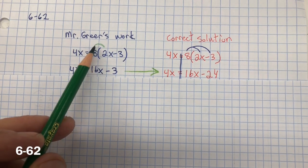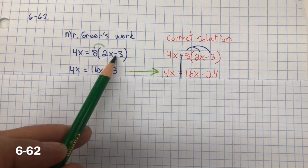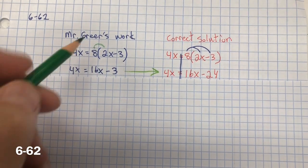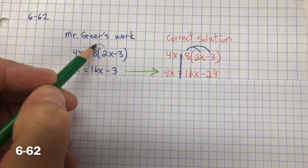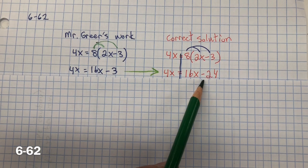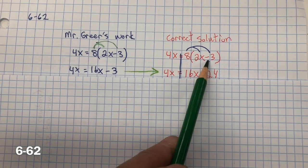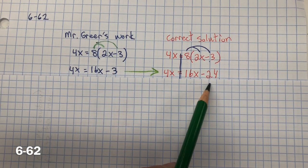So he forgot to distribute to the second term because he just has negative 3. But you have to distribute this 8 to both terms. So you should get 8 multiplied by 2x is 16x, and 8 multiplied by negative 3 is negative 24.